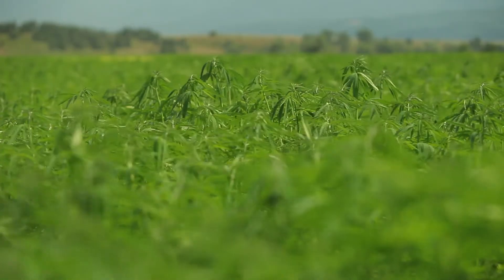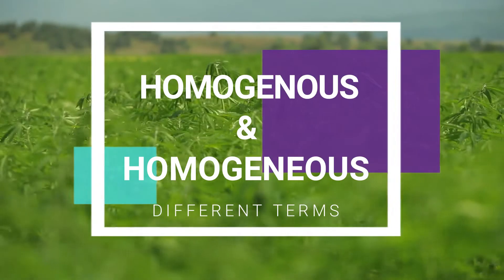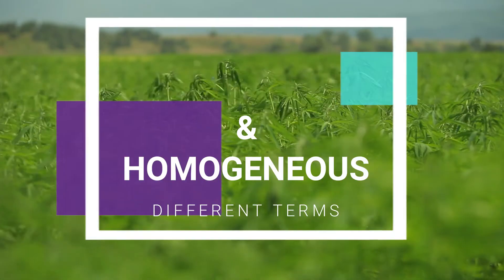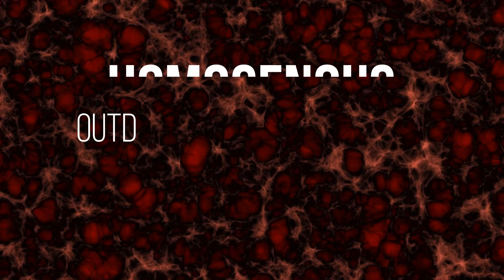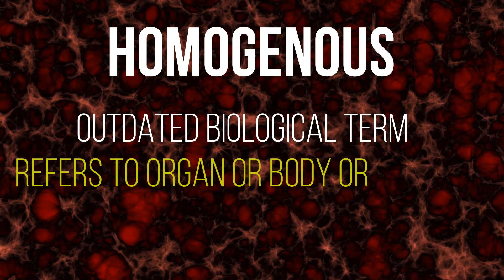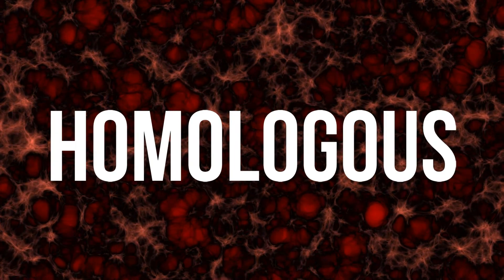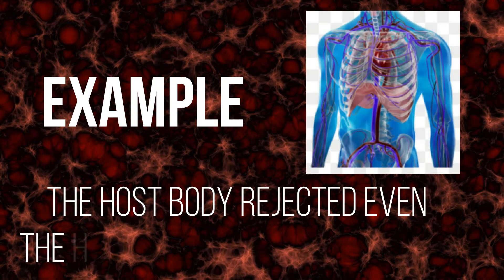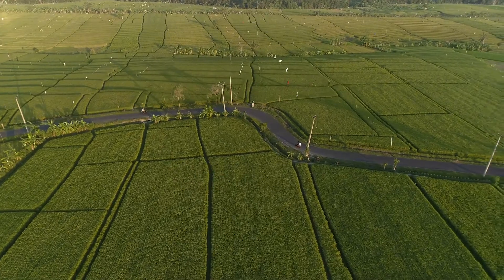One more important thing: homogeneous and homogeneous are two different terms — they are not synonyms. Homogeneous is an outdated biological term referring to organs or body tissues with genetic similarities; it has been replaced by the word homologous. For example: 'the host body rejected even the homogeneous tissue implants.' Whereas homogeneous is an adjective referring to having similar or uniform characteristics.